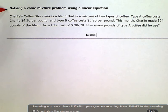Solving a value mixture problem using a linear equation. Charlie's Coffee Shop makes a blend that is a mixture of two types of coffee. Type A coffee costs $4.30 per pound and type B coffee costs $5.80 per pound.